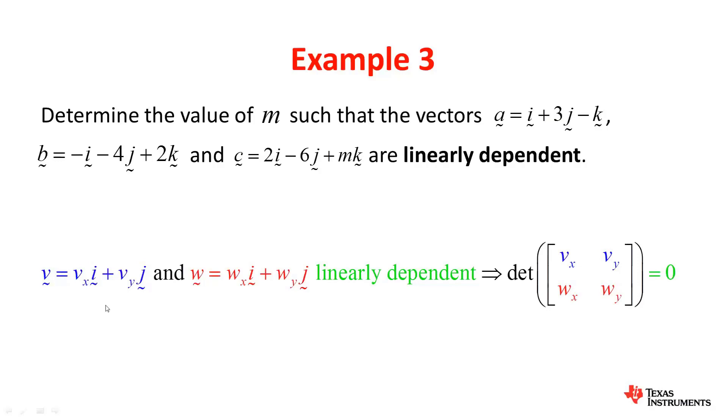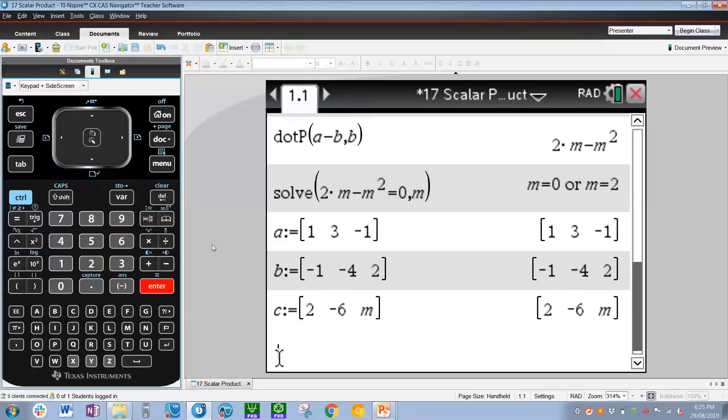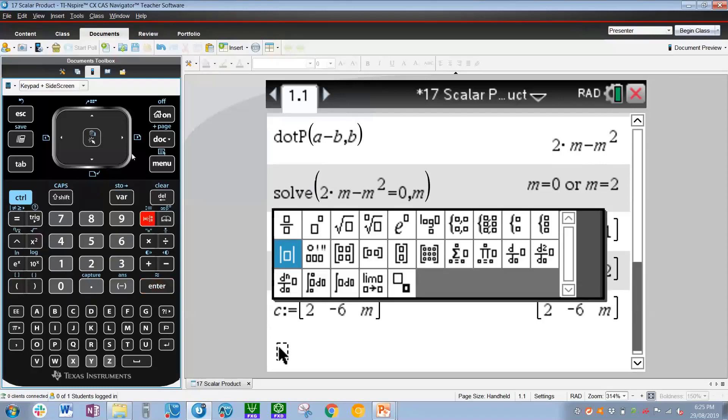Now, whilst this theorem is relating to two dimensional vectors, you can also expand it to three dimensional vectors. In other words, three vectors of three dimensions each will simply need a three by three matrix and the determinant.